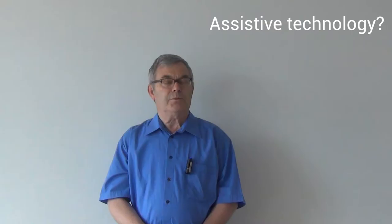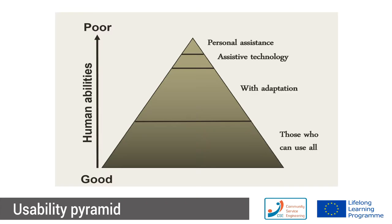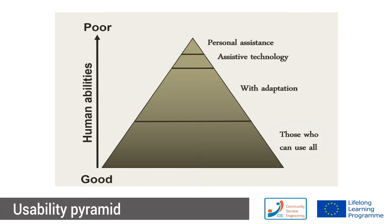The first idea is what is assistive technology, and another topic that is quite heavily used is design for all. How does that fit with usability? I have a couple of slides borrowed from my colleague Knut Norby. He showed us a usability pyramid — a pyramid starting with good human abilities on the bottom and poor abilities on top.